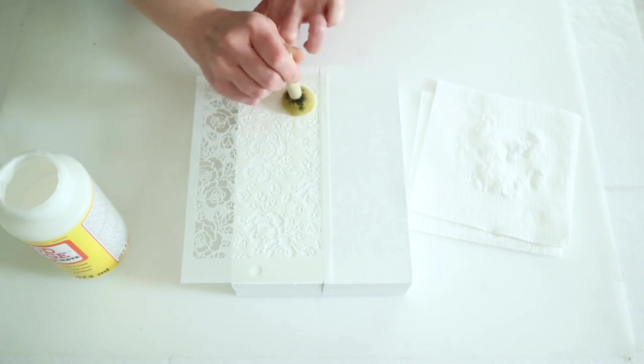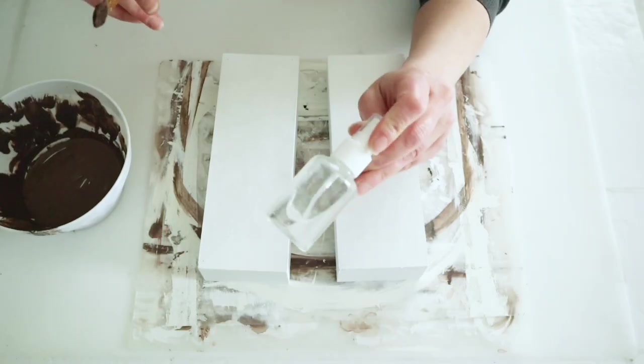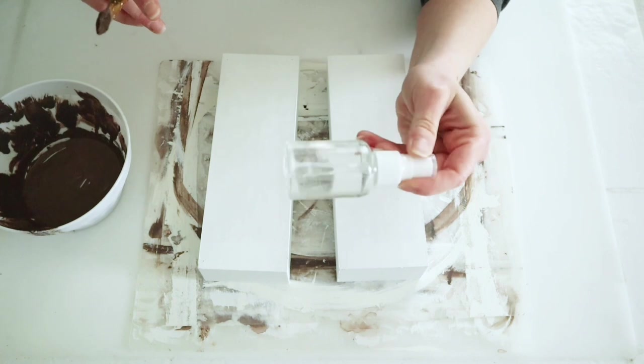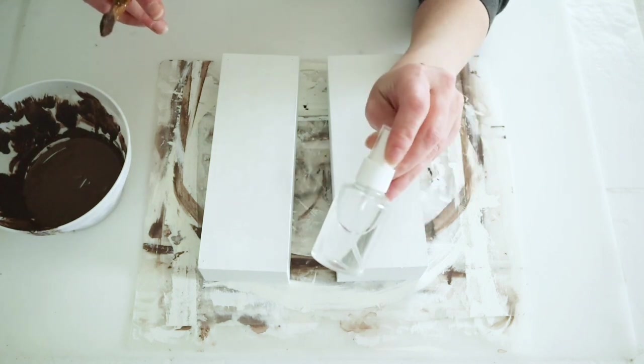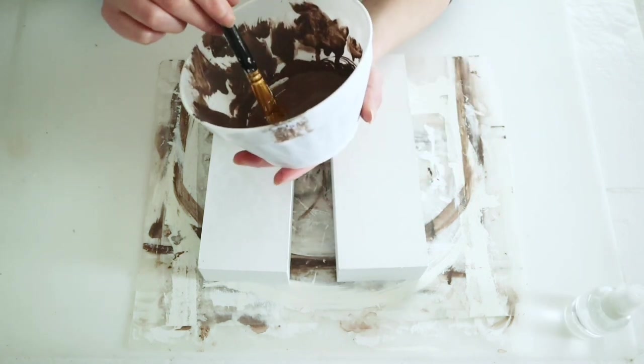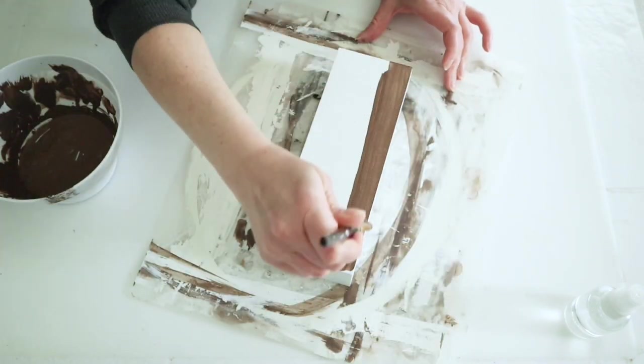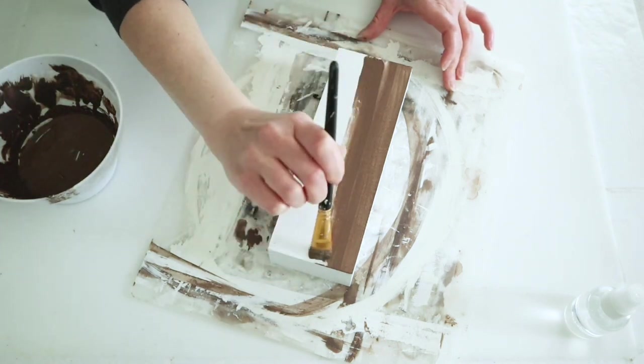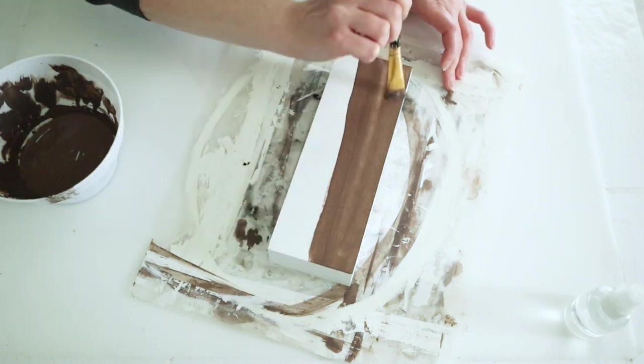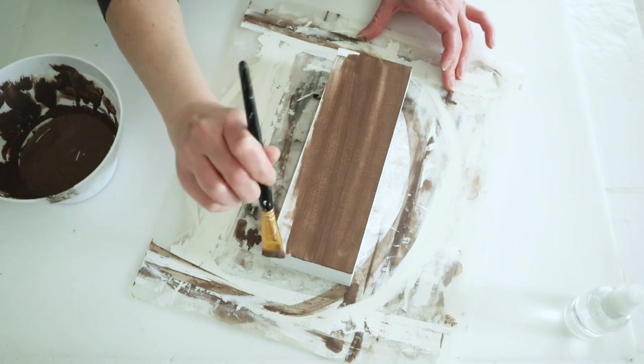Once the Mod Podge is dry, I'm filling up a spray bottle of water. Then I'm taking that same brown color I always use, but this time my brush is dry, and I'm brushing over the fronts of these where those stencils and the Mod Podge are. I'm doing long strokes.